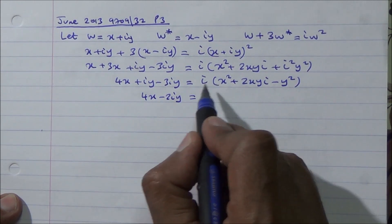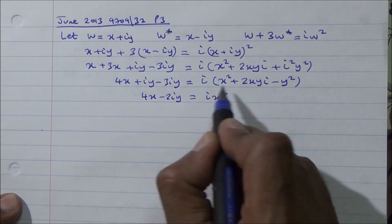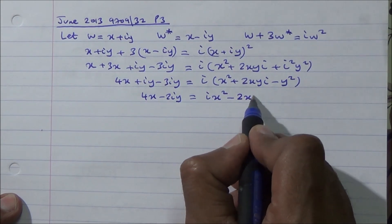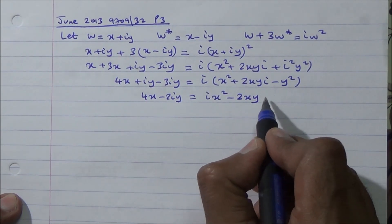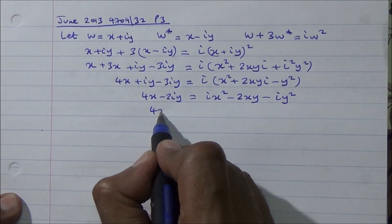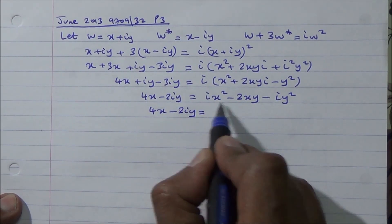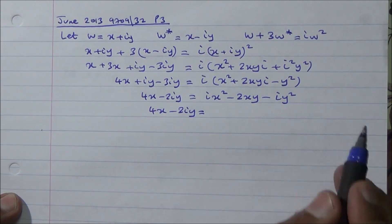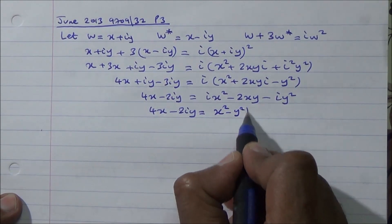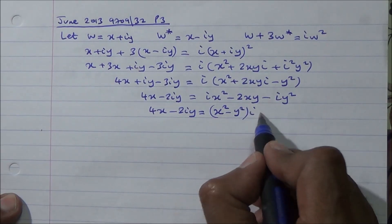So expanding fully: i times x squared is ix squared; i times i times 2xy is i squared times 2xy which equals minus 2xy; and i times y squared is minus iy squared. Therefore 4x minus 2iy equals x squared minus y squared, with imaginary part from ix squared minus 2xy, giving the collected form with real part x squared minus y squared and imaginary terms.